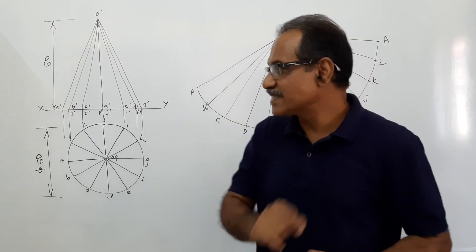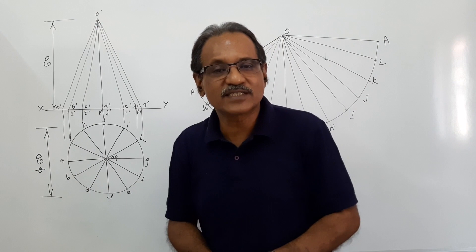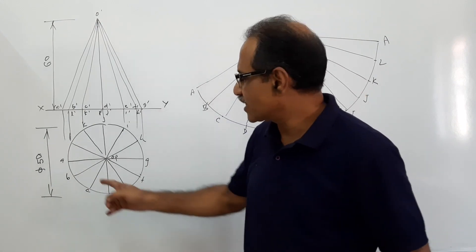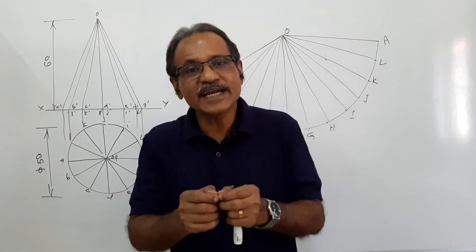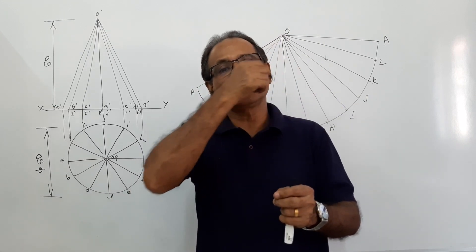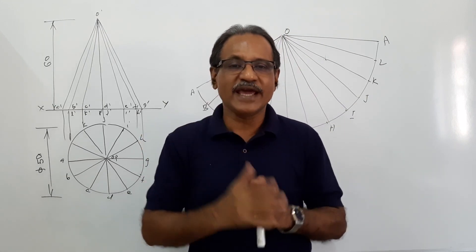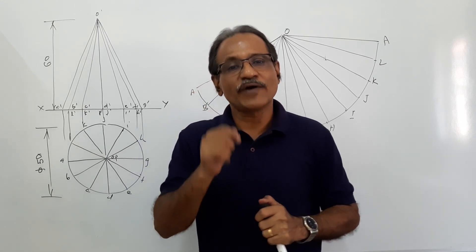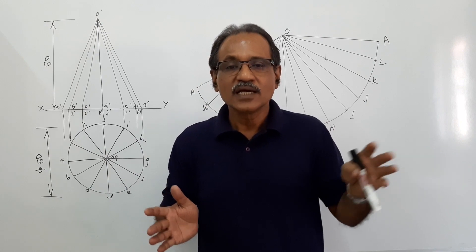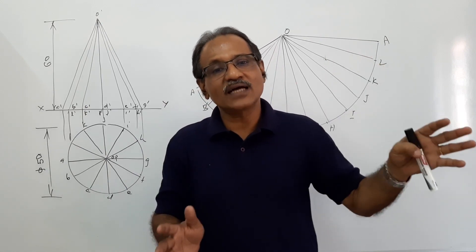The cone has an insect stationed at a point of its base circle, which point, any point, let's say A. The insect travels around the body and comes back to A tracing the shortest path. You are asked to find out that length and show that path in the plan and elevation.